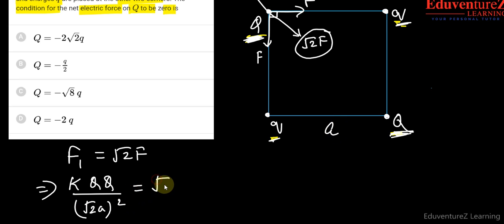This is equals to root under 2. The force F is the force between these two charges. So it will be K, Q1, Q2 upon A square.